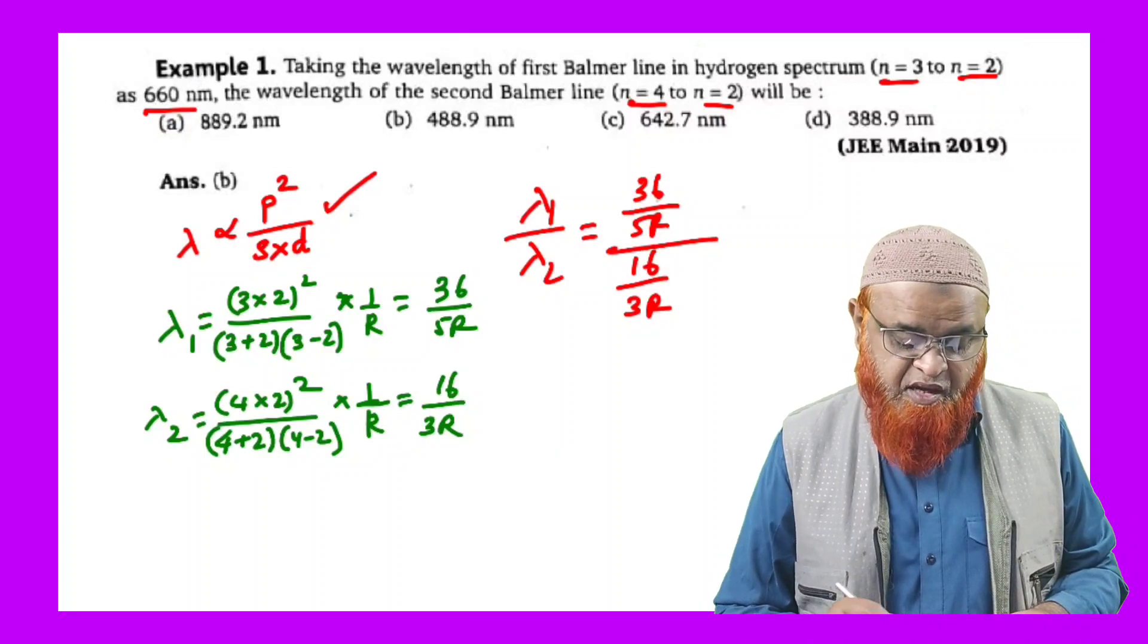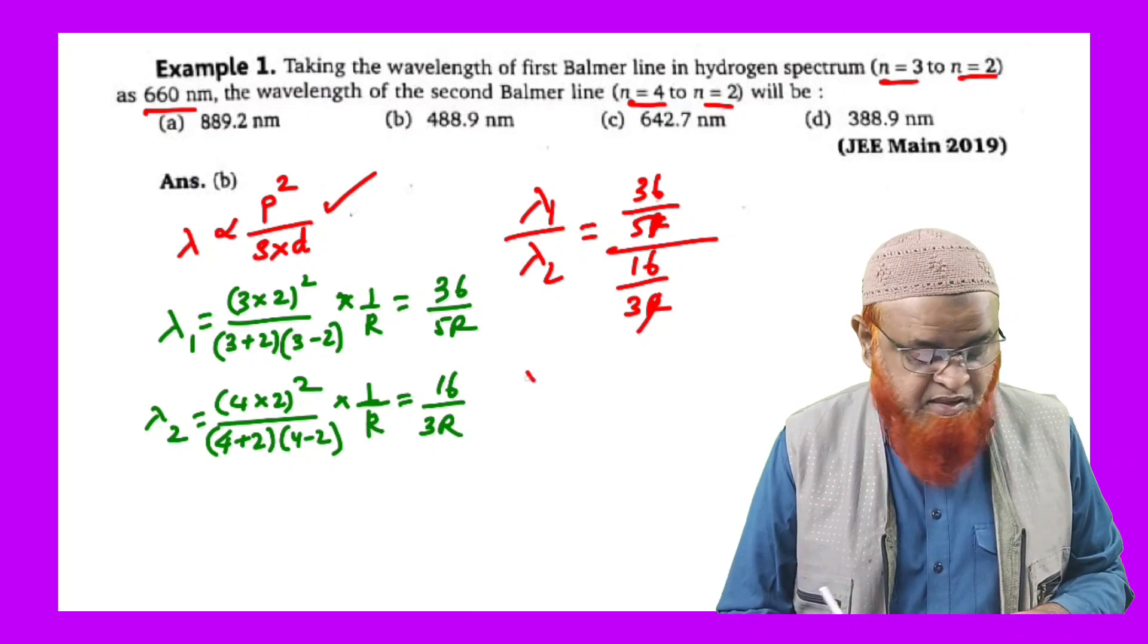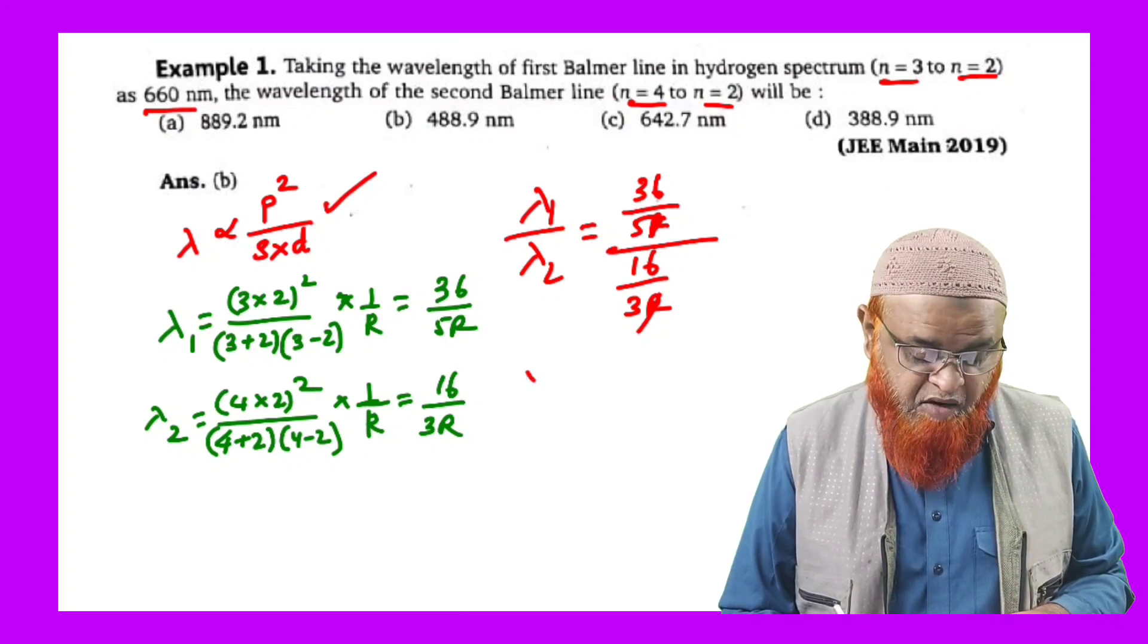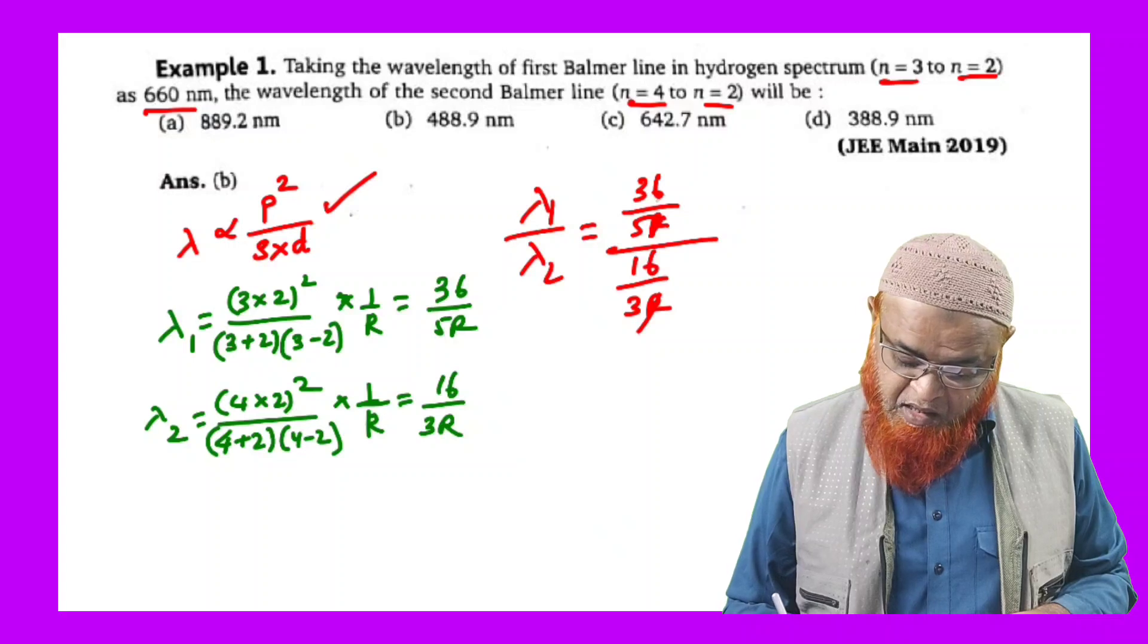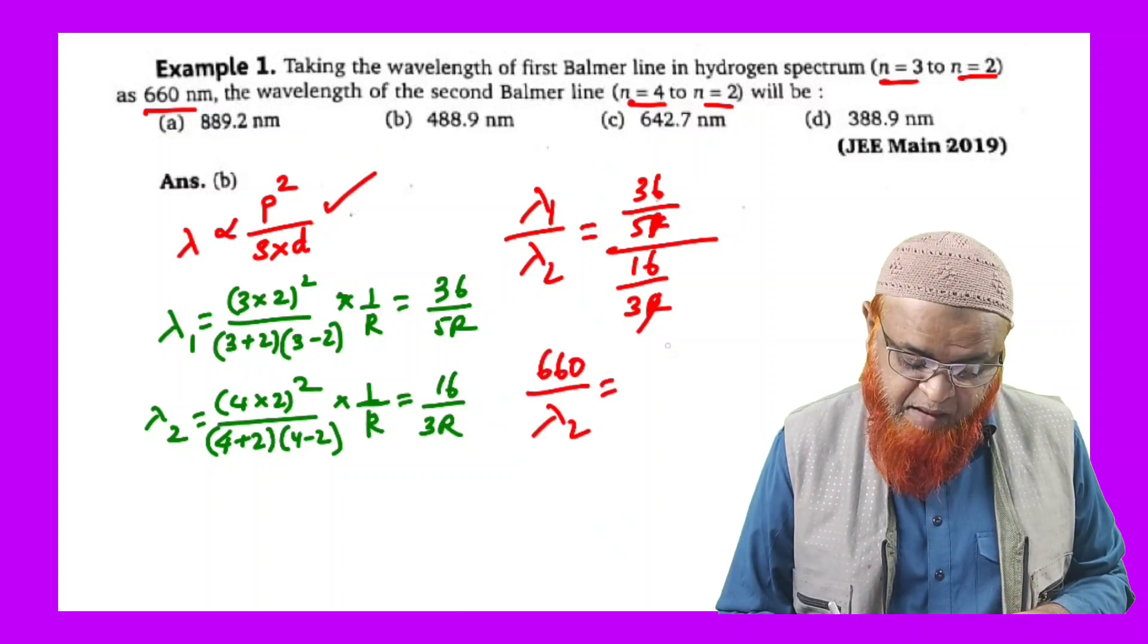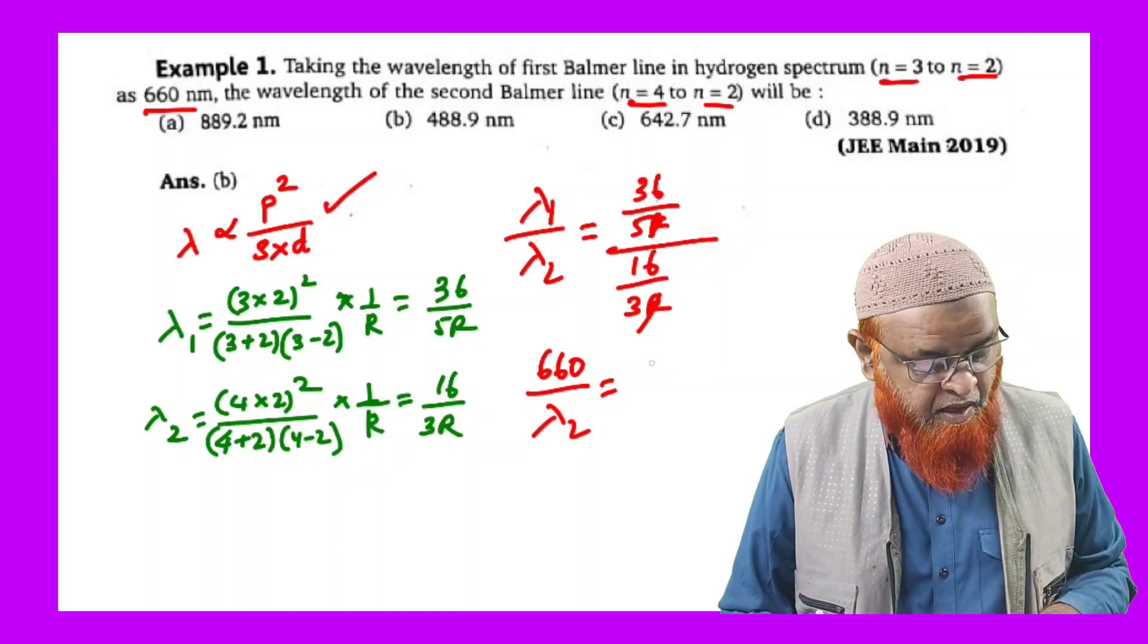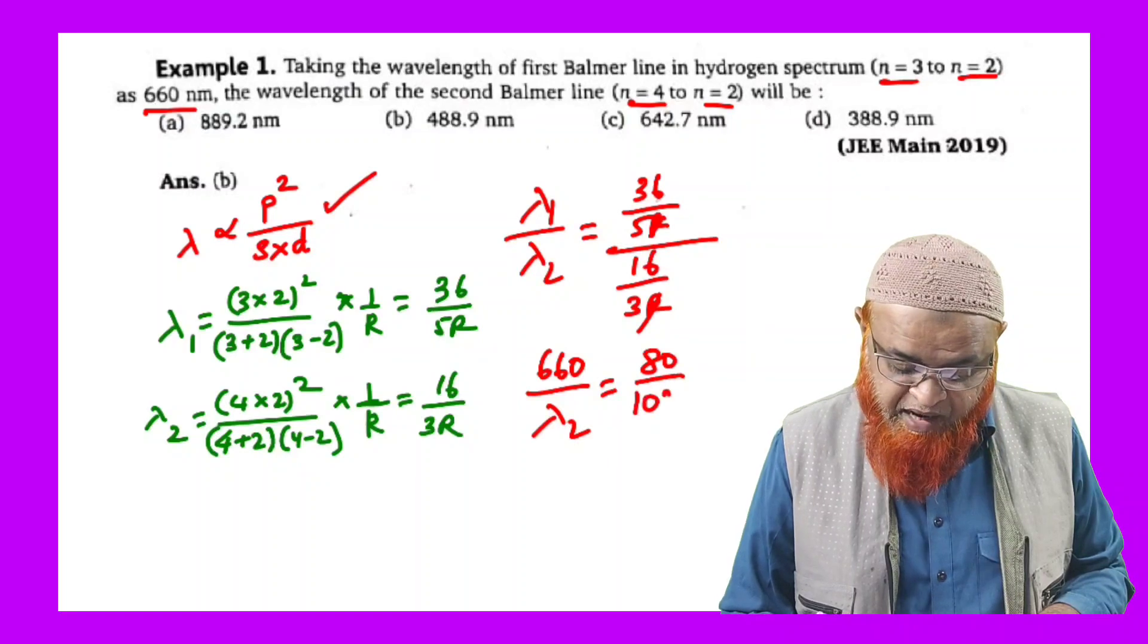After that if you cancel out R, you will be getting lambda 1. Lambda 1 is given here already as 660 nanometers. 660 divided by lambda 2 equals 36 by 5 and 16 by 3, which is 80 by 108. So therefore from this you will be getting wavelength lambda 2.